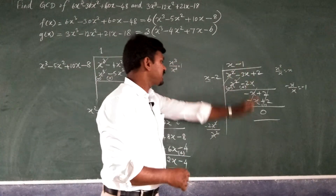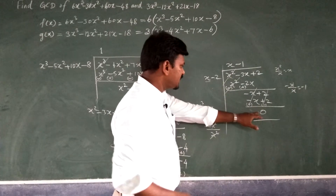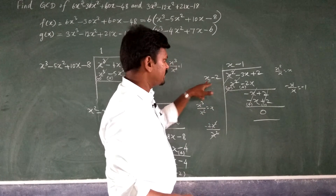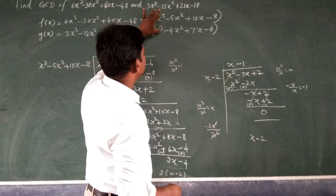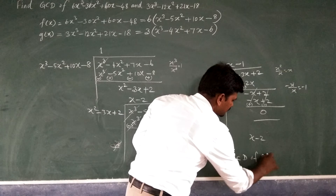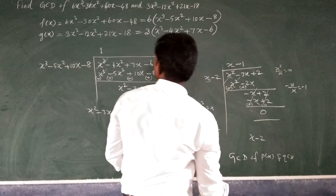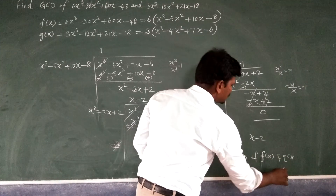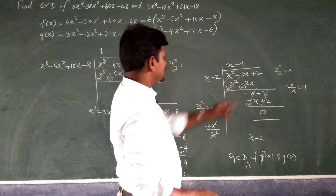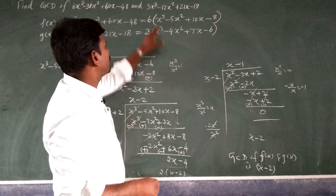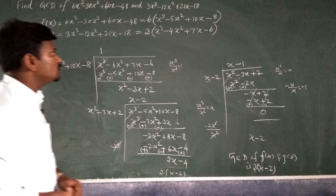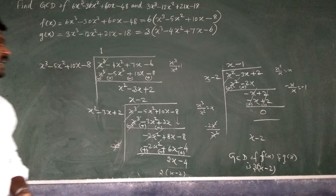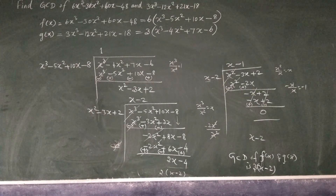We continue the process until the remainder is 0. When the remainder is 0, the last divisor x - 2 is the GCD of the two inner polynomials. The GCD of 6 and 3 is 3. Therefore, the GCD of the original polynomials f(x) and g(x) is 3(x - 2). I hope you understood — practice again and again and you will get the concept easily. Thank you.